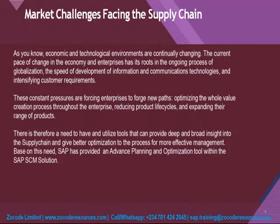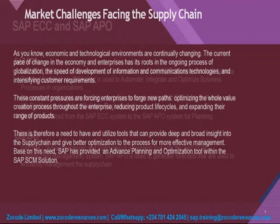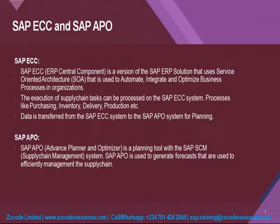There is therefore a need to utilize tools that provide deep and broad insight into the supply chain and give better optimization for more effective management. To meet this need, SAP has provided an Advanced Planning and Optimization tool within the SAP solution. ECC stands for ERP Central Component, a version of the SAP ERP solution using service-oriented architecture to automate, integrate, and optimize business processes.